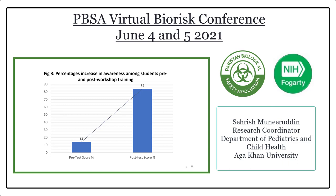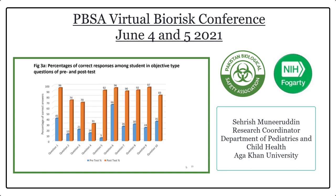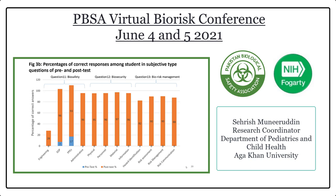This bar graph shows the percentage increase in awareness among students pre- and post-workshop training. There was a 70% increase in knowledge after the workshop, from 14% to 18% in pre-test and post-test scores respectively. When we computed the percentages of objective and subjective type questions separately, there was a substantial increase in knowledge in the post-test for objective-type questions, as seen in the orange bars. For subjective-type questions, where students were asked to name the four components of the primary controls of biosafety and biosecurity along with components of biorisk management, there was no baseline knowledge in the pre-test, but a high and substantial increase in knowledge post-test.